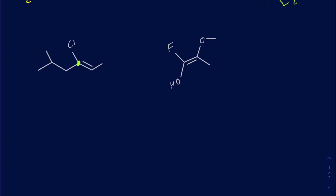For the next example, on the yellow carbon I have a methyl group on top and a hydrogen on the bottom — so methyl is priority one and hydrogen is priority two. On the green carbon I have a chlorine on top and a carbon on the bottom — chlorine has a higher atomic number, so chlorine is priority one and the carbon is priority two. The higher priority groups are on the same side, making this a Z form.